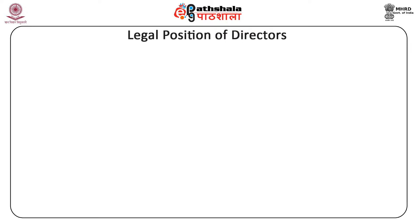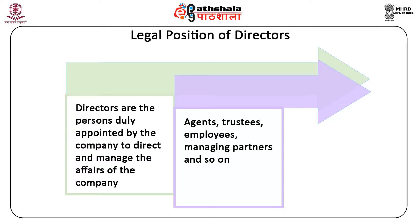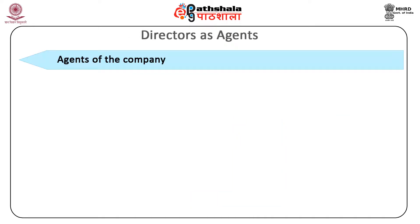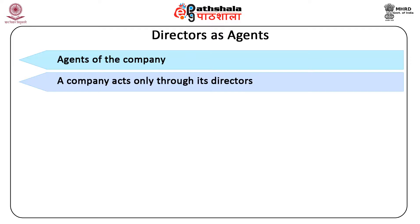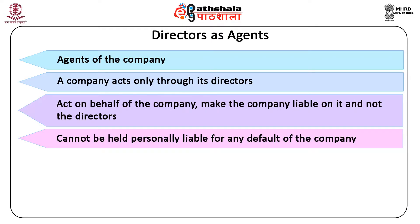Independent directors bring accountability and credibility to the board process and are the trustees of good corporate governance. Regarding the legal position of directors: directors are the persons duly appointed by the company to direct and manage the affairs of the company. They are sometimes described as agents, trustees, employees, managing partners, and so on. But each of these expressions is used not as exhaustive of their powers and responsibilities, but as indicating useful points of view. Directors as agents: directors are viewed as agents of the company for the conduct of business of the company. A company cannot act by itself — it acts only through its directors. Directors act on behalf of the company, making the company liable and not the directors. The directors cannot be held personally liable for any default of the company.